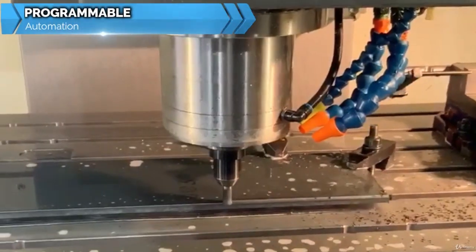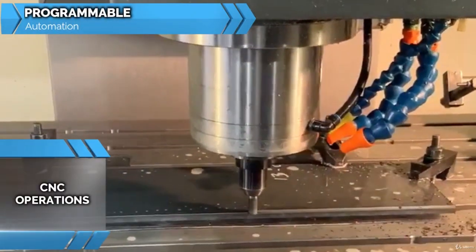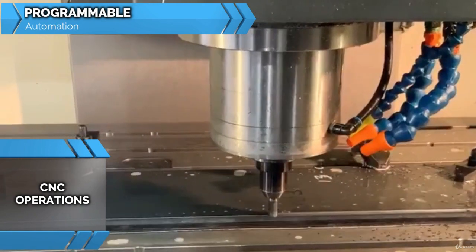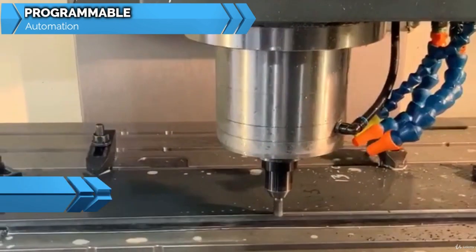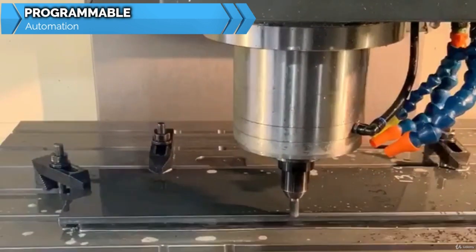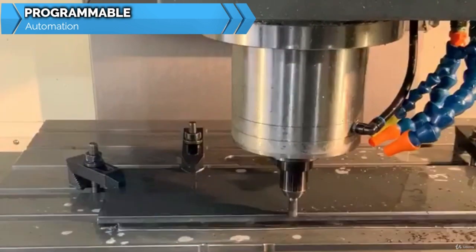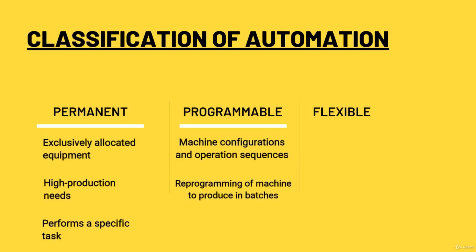Programmable automation can perform several programmed tasks. The function of the control circuit here is programmed by the user and can be modified only by the user. Last but not the least, we have flexible automation.